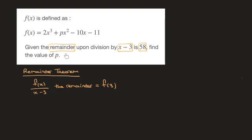We know from the question that the remainder is 58, but we also know from the remainder theorem that the remainder is f(3). So we can go ahead and state that f(3) equals 58.